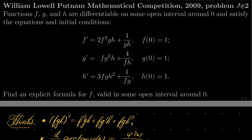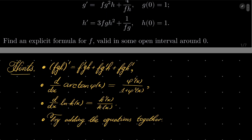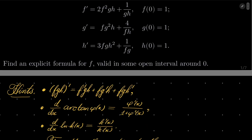It's a nice problem. Here are my hints. First of all, we have this generalized product rule for three functions: (fgh)' = f'gh + fg'h + fgh'. Then, the derivative of arctangent composed with a function φ is φ' over 1 plus φ squared. And the derivative of natural log of k is k' over k. Last hint: you may wish to try adding these equations together after getting rid of the denominators.